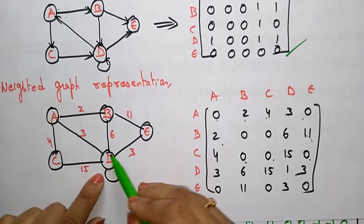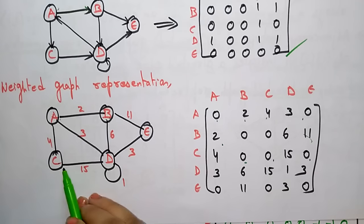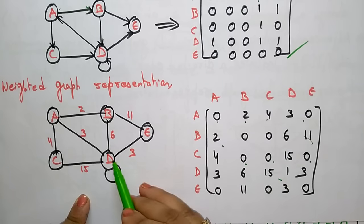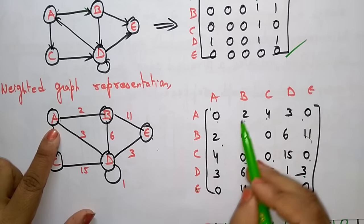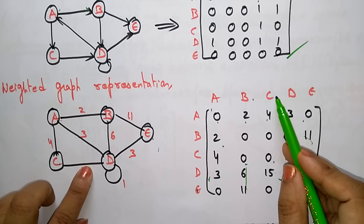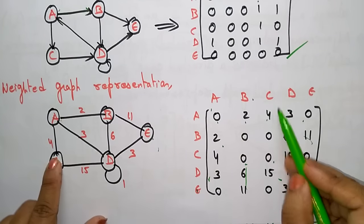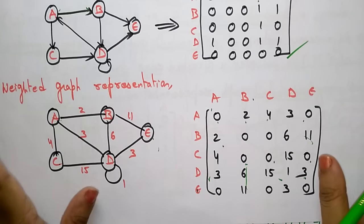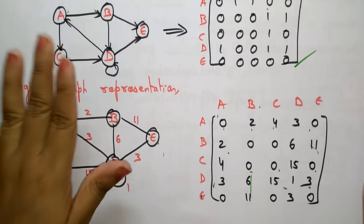Coming to d - all lines are connected. D to a - 3. D to b - 6. D to c - 15. D to d - self loop, 1. D to e - 3. E to a - no connection. E to b - 11. E to c - no connection, 0. E to d - 3. E to e - no loop, 0. This is how you calculate the adjacency matrix for the given graph.